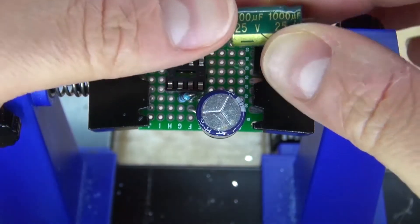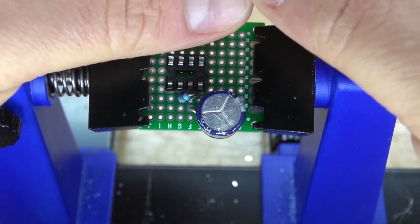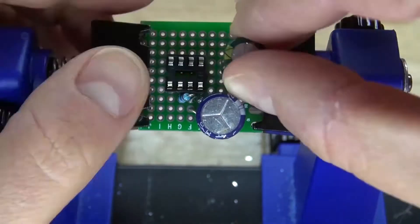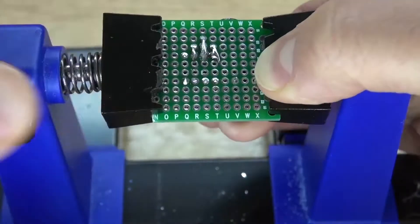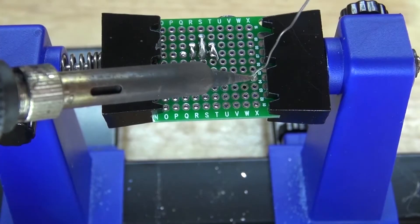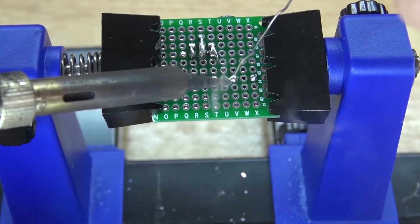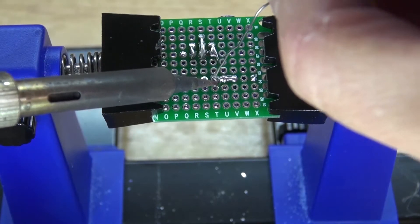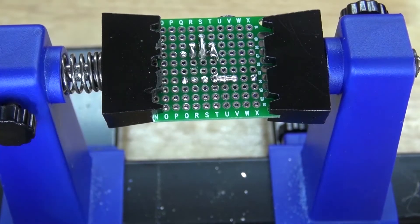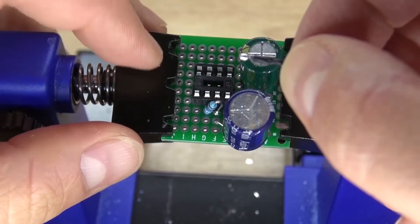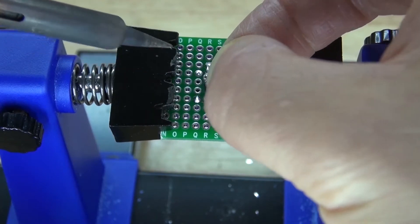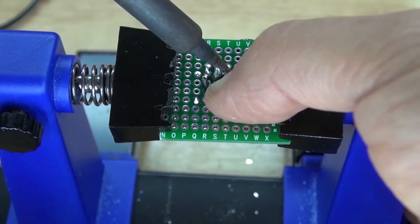Next take your 1000 microfarad electrolytic capacitor and connect the negative to pin 5. Bend the leads over, solder it into place and then solder bridge it together. Next you're going to need to take your negative wire. Solder it to pin 2 and then solder it to pin 4.